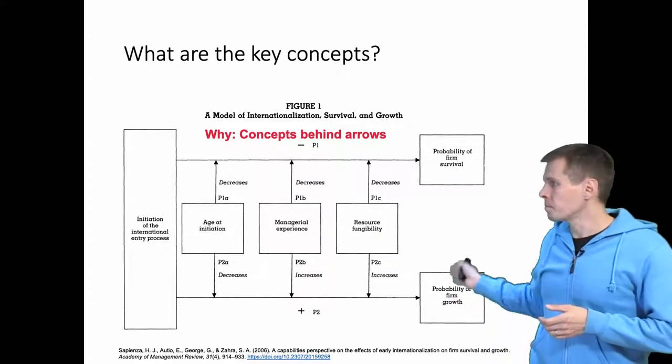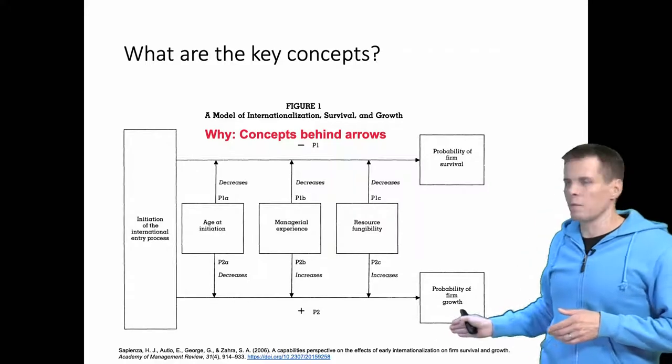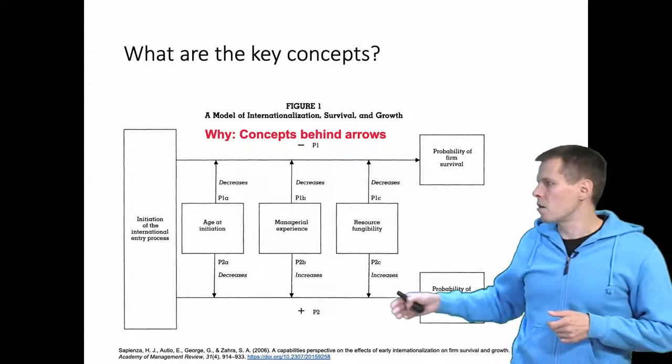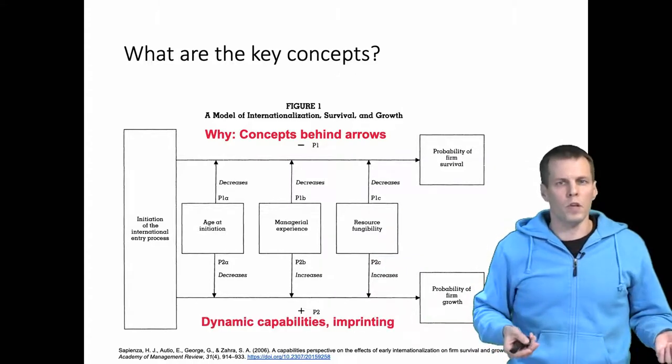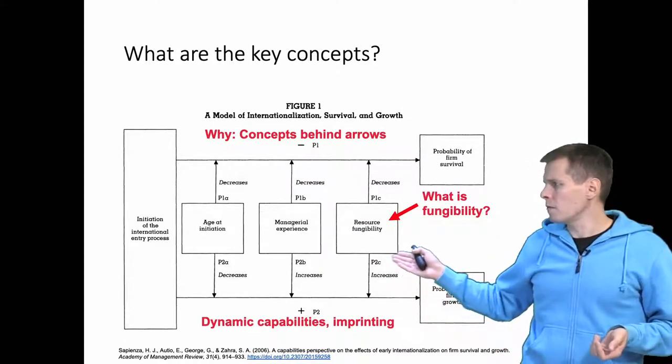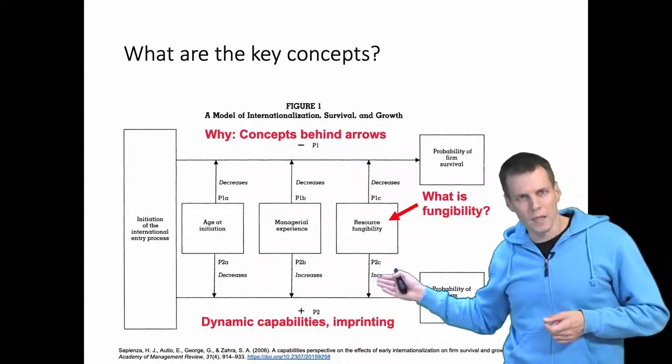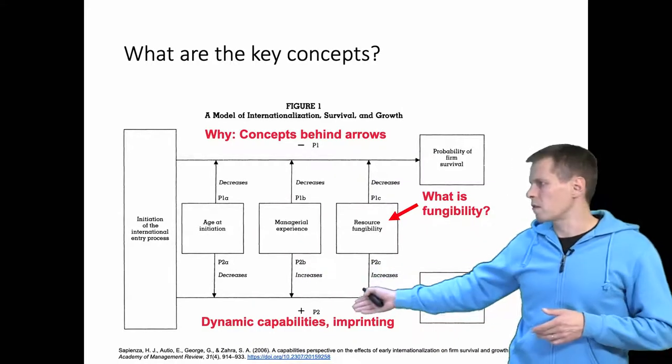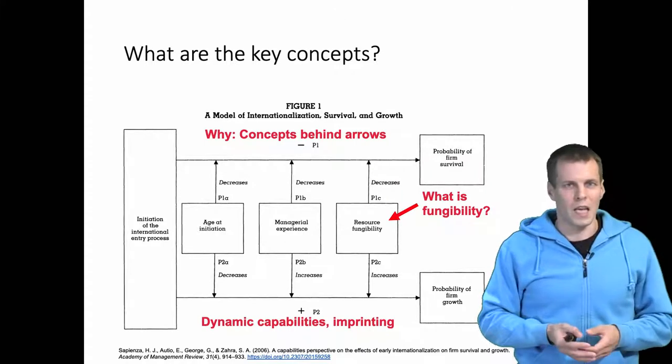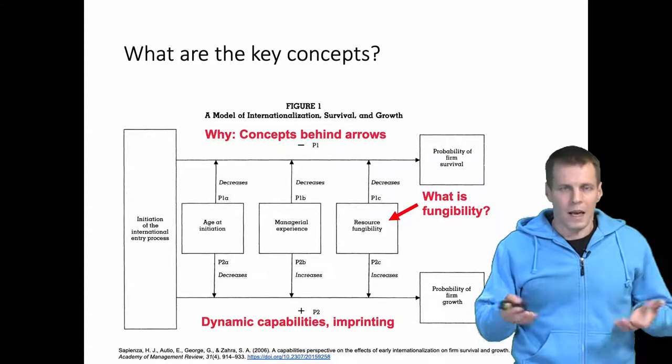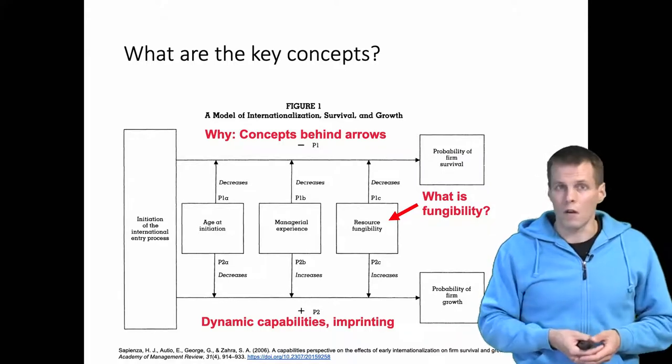And then once you have identified all the concepts, you need to understand what the concepts are about. So if we just look at these boxes, six boxes here, probably firm survival we understand - survival means not dying. Growing means getting bigger, that's pretty easy to understand. Age, pretty easy to understand. Experience, we have an intuitive understanding what experience means. But what is resource fungibility? So how do we define resource fungibility? What is the meaning of this term? And also there are the theory part, the part that explains the logic behind these arrows, contains concepts such as dynamic capabilities and imprinting. If we go and ask any person at the university what is dynamic capabilities, what is imprinting, what is fungibility, and if that person is not familiar with this literature, they have probably no idea. But to understand this paper, you need to understand these terms.